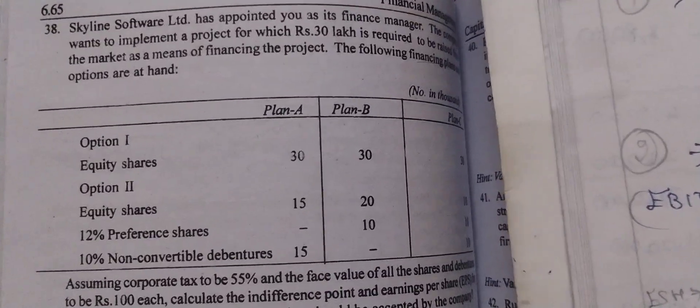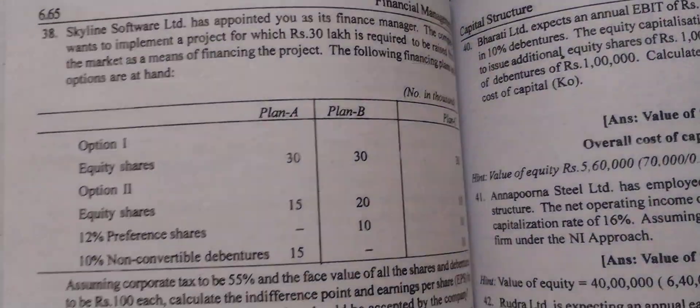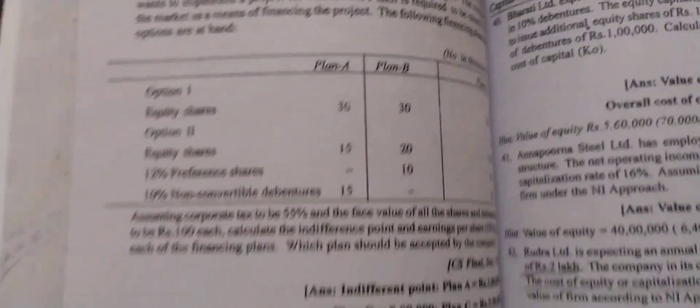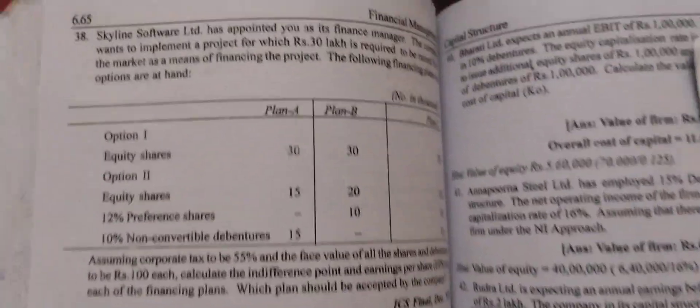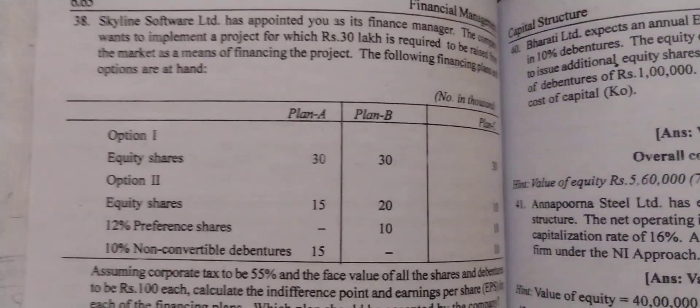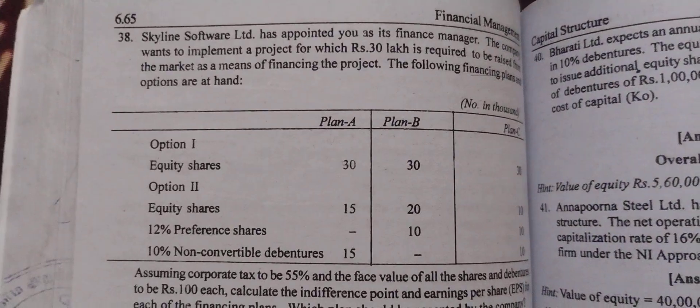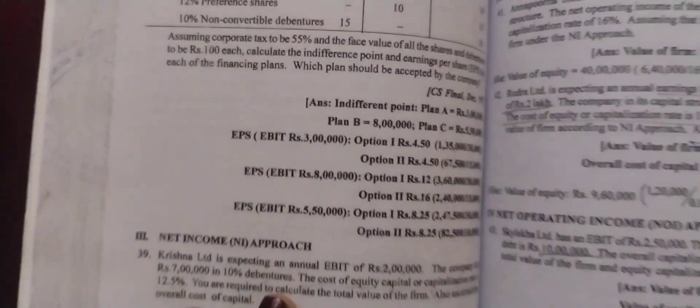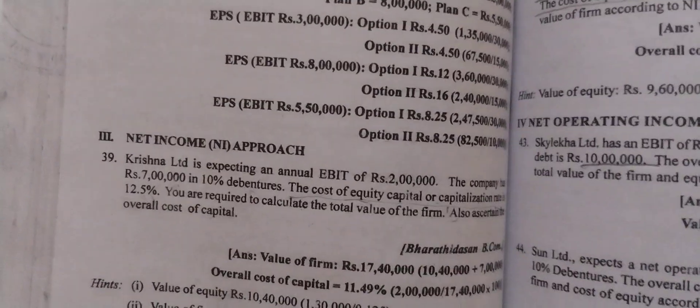In the financial management book, unit on capital structure, heading page number 6.65. Let's look at the net income approach.